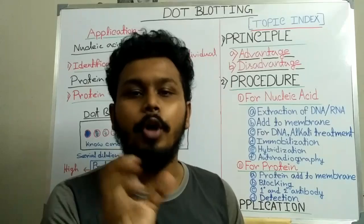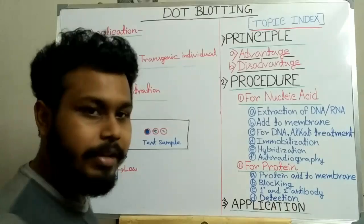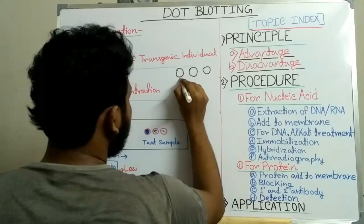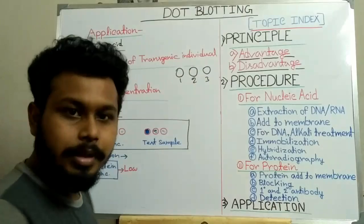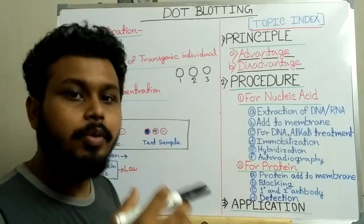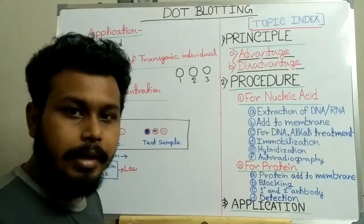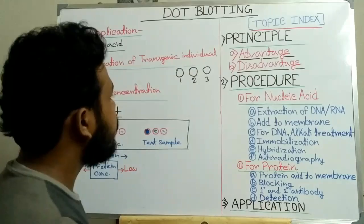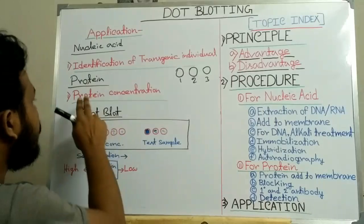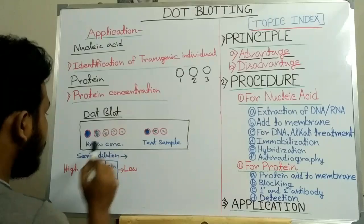The applications of dot blotting include the identification of transgenic individuals. Suppose you want to introduce a gene to different types of cells — for example, three types of cells. You introduce the gene to all three types, and then you want to detect which type of cell took your gene and integrated it into its own DNA. You isolate the DNA and perform a dot blot to interpret which cell incorporated your gene — that is how you identify transgenic individuals.